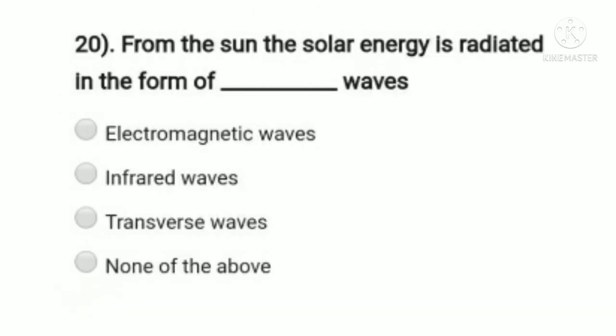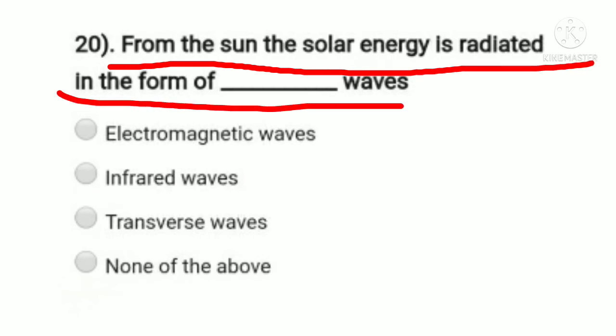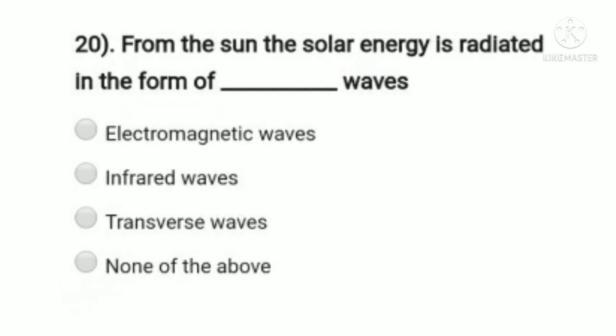Question 20: from the sun, solar energy is radiated in the form of dash waves — option A: electromagnetic wave, option B: infrared wave, option C: transverse wave, option D: none of the above. Solar energy comes from the sun to the earth in the form of electromagnetic waves, not just electric or magnetic waves. So option A, electromagnetic wave, is the right answer.